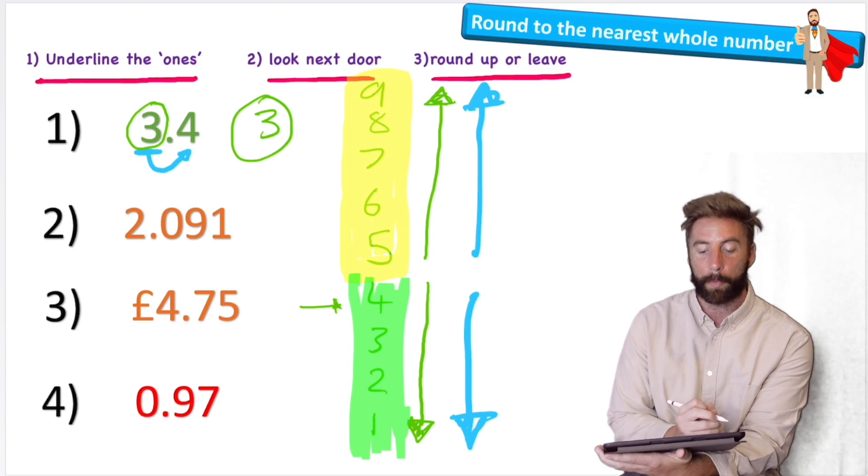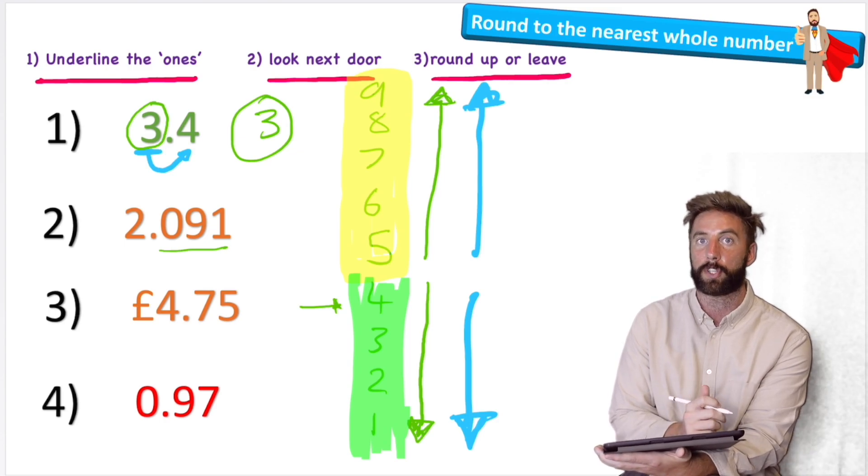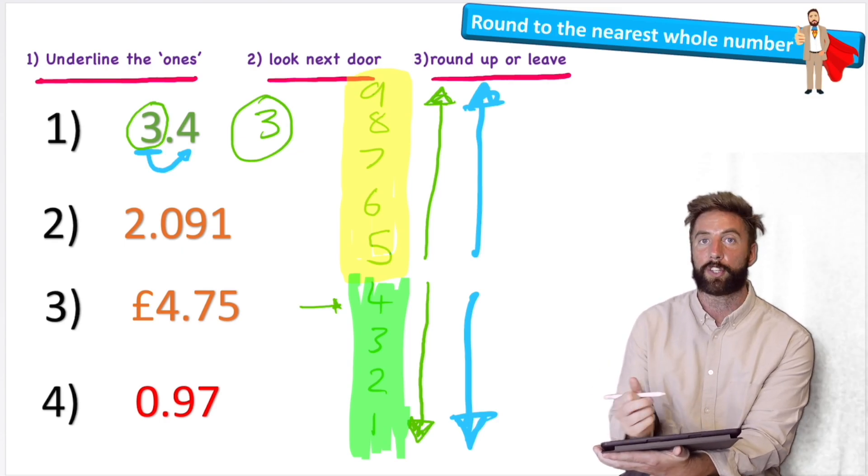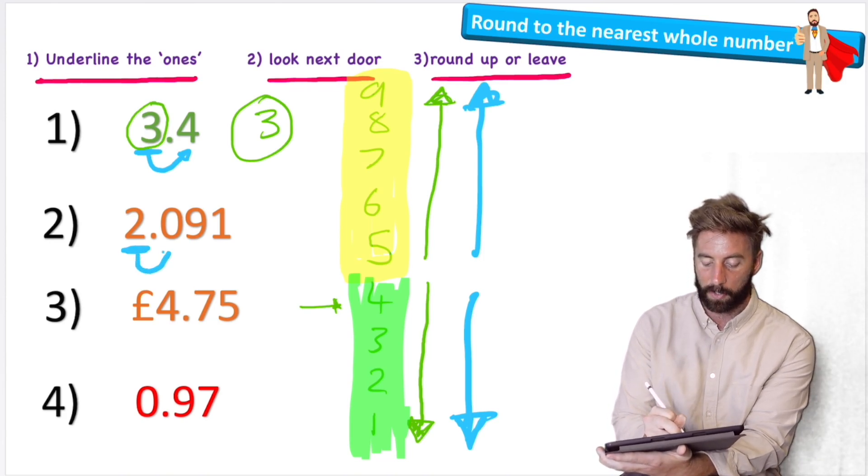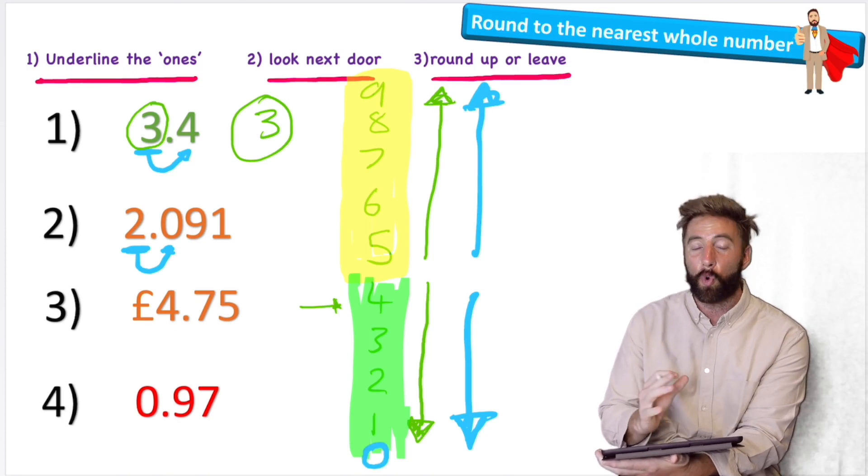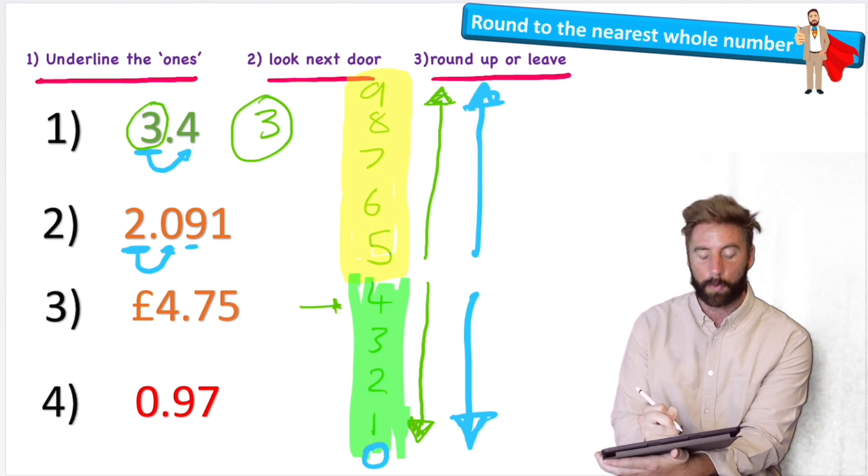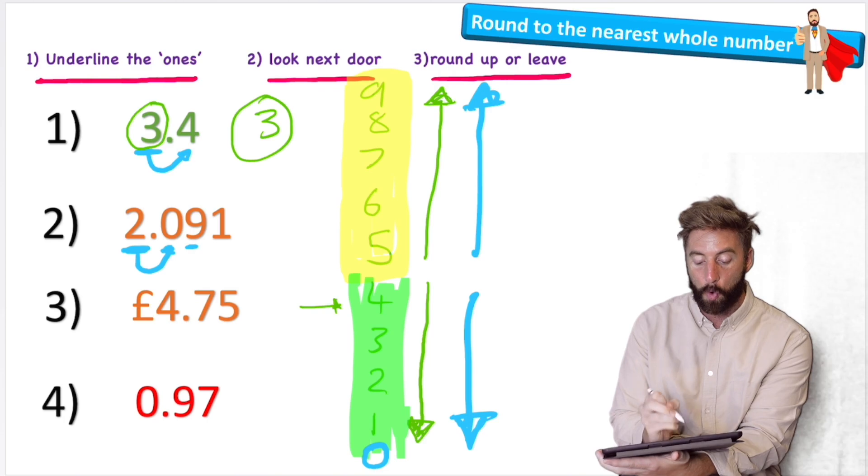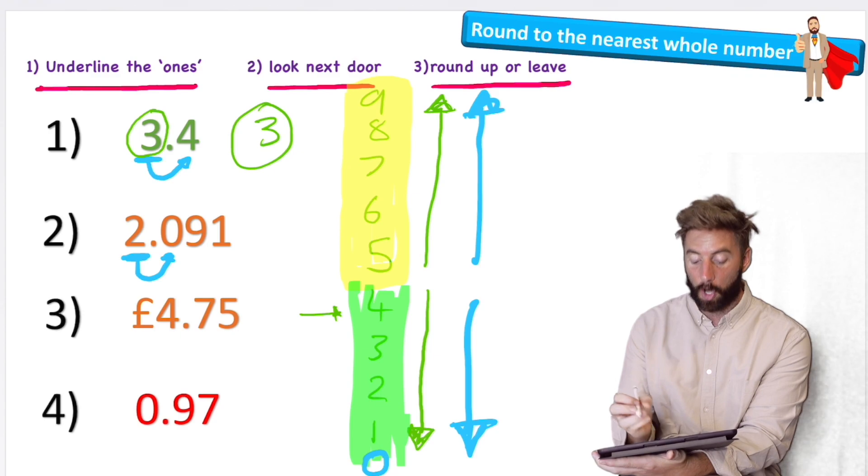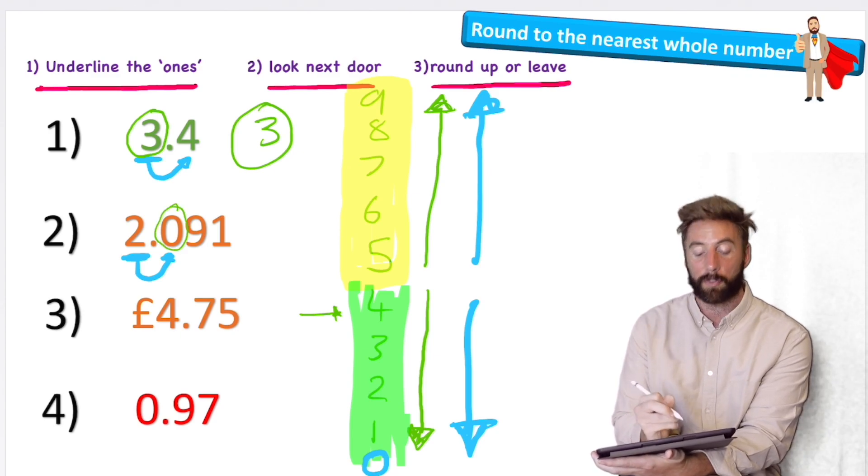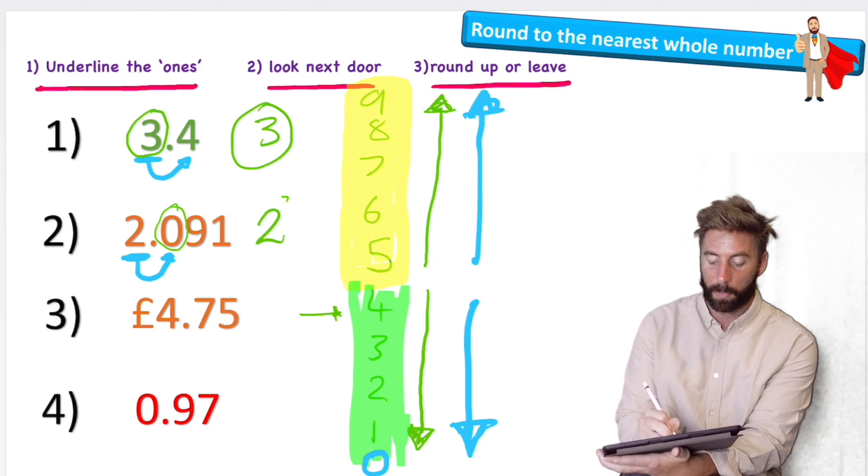Okay, number two looks a little bit more difficult because there's extra digits after our decimal place. But remember, that's not going to impact us or influence our decisions at all. We're just going to follow the same steps that we did before. So underline our one's value and look next door. And we have a zero. And a zero would also be considered a number that we let it rest on. So even though it's got a nine next to our zero, that doesn't influence us because we only look next door to the one digit next door to the right. So looking at my zero, what am I going to do? That's right. I'm going to let it rest. So 2.091 becomes just the number two.